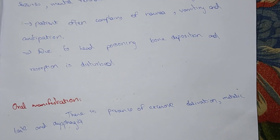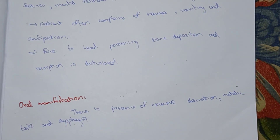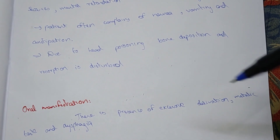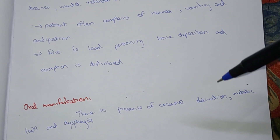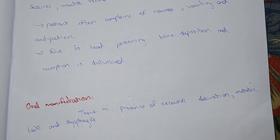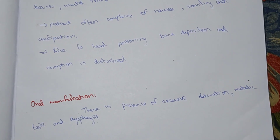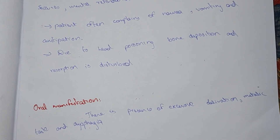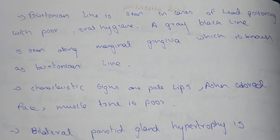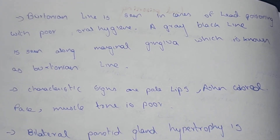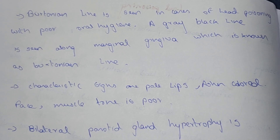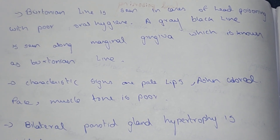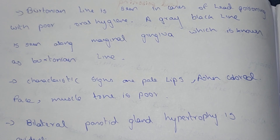Clinical features of lead poisoning include encephalopathy, disturbed blood and bone deposition and resorption. Oral manifestations include excessive salivation, metallic taste, and dysphagia.